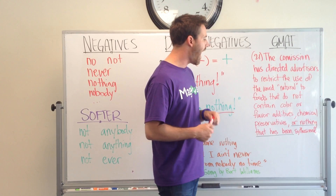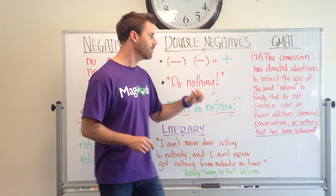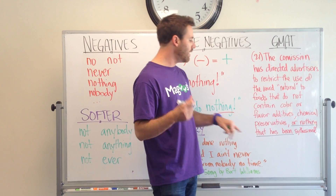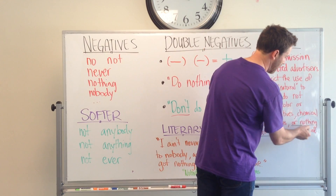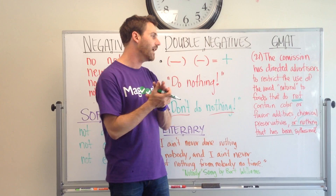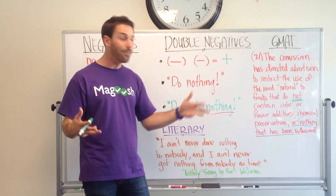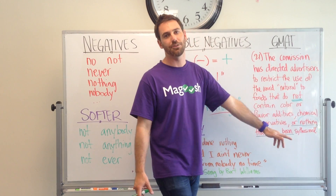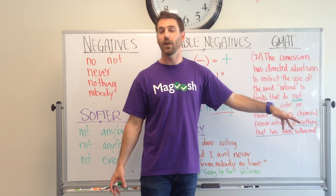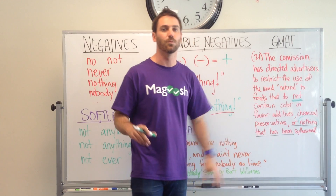The question says: 'The commission has directed advertisers to restrict the use of the word natural to foods that do not contain color or flavor additives, chemical preservatives, or nothing that has been synthesized.' We can see this is the underlined portion of the sentence, and we can see we have the negative word 'nothing' here. But if you go further back in the sentence, we have 'do not' — so we have a double negative. There's actually a 2-2 split between using 'nothing' or 'anything.' If you know about double negatives, you'll know you can't have 'not' and 'nothing' in a sentence — it's not formal English. So you'd want to eliminate all answer choices that have 'nothing' and go with answer choices that have 'anything,' leaving you only two answer choices to work with, which makes it a lot easier.